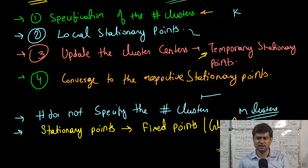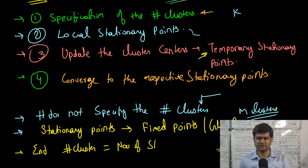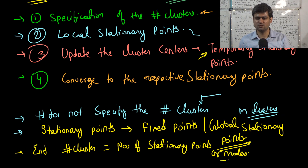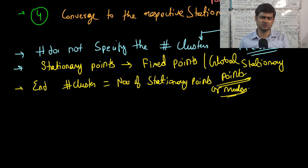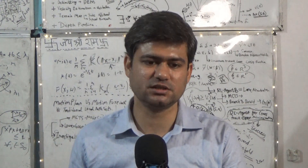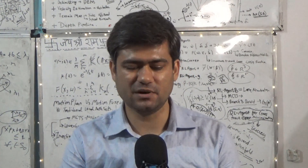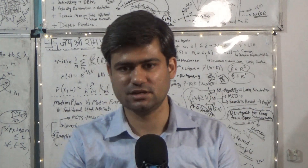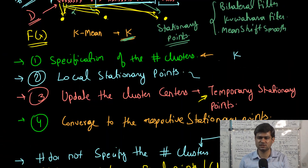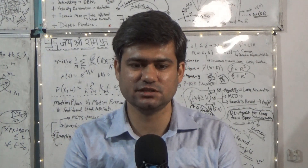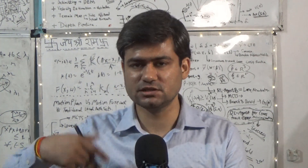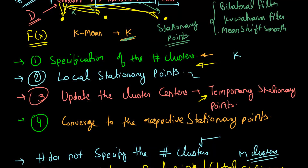In the beginning of mean shift, we assume there are m clusters — one per data point. At the end, the number of clusters equals the number of stationary points or modes of the kernel density approximator function. The number of clusters found depends on the bandwidth parameter h. Because we do not have to specify the number of clusters, we call it a non-parametric clustering algorithm, whereas k-means is parametric because the number of clusters is fixed and must be specified in advance.